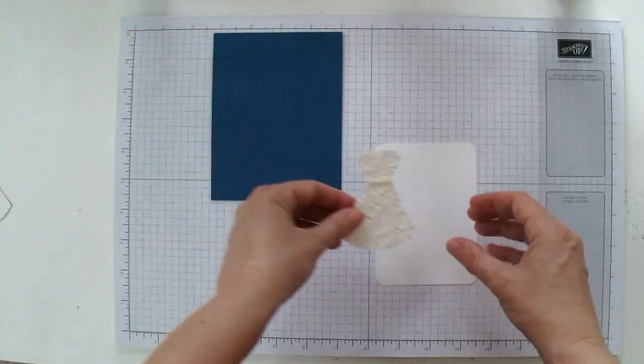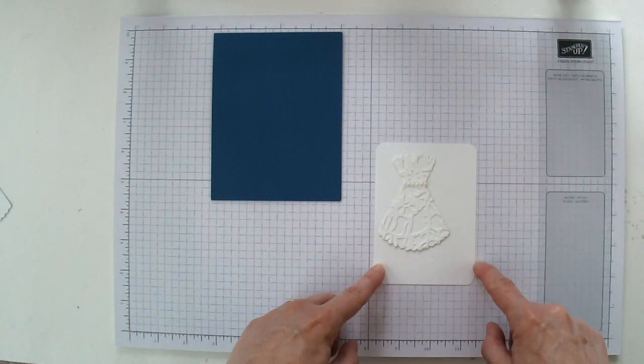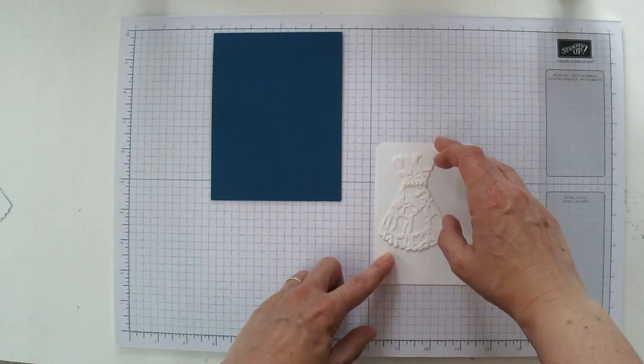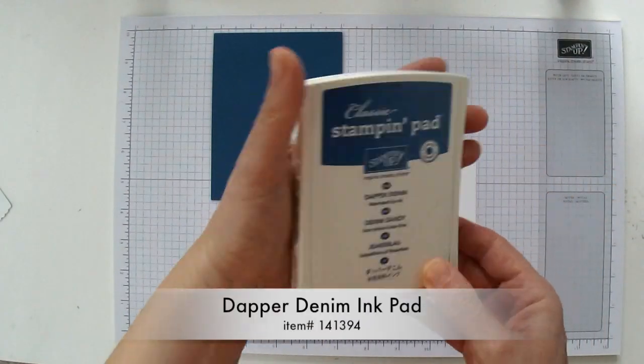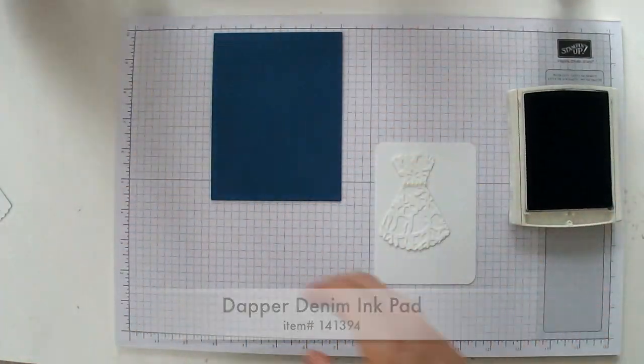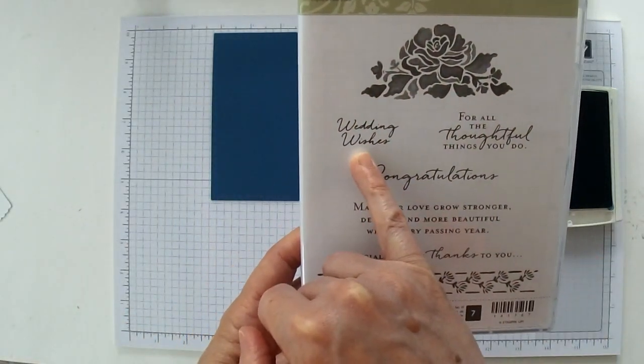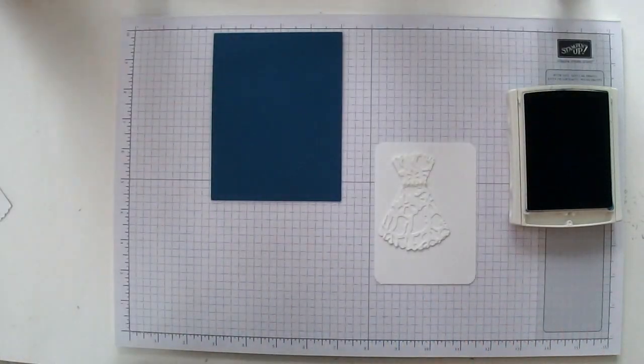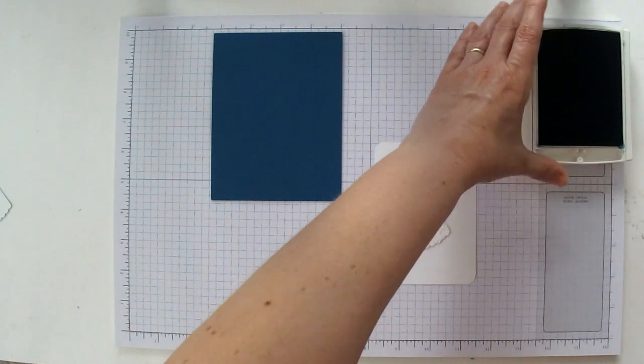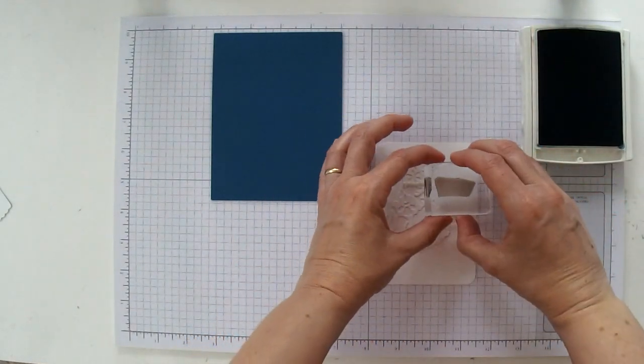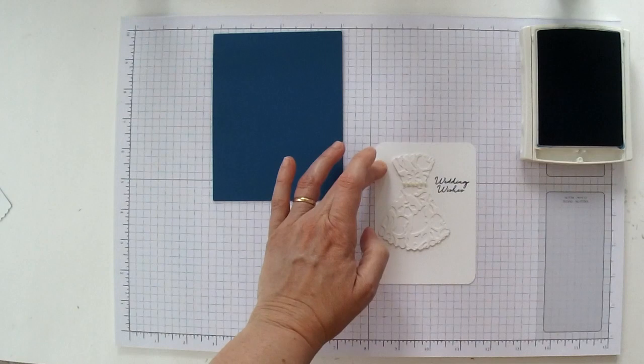And then you're just going to lay your dress right onto this piece. Keeping in mind we're going to have ribbon down here at the bottom, so I'm going to leave a little bit more room on the bottom, and then I'm going to take my Dapper Denim ink pad and open it up. And then from the Floral Phrases stamp set, it has this great greeting that says wedding wishes. So I've already got that mounted on a block and we're just going to take that and ink it up in the same color as our card base, Dapper Denim. And then we're just going to come in and stamp that right next to the dress like that.